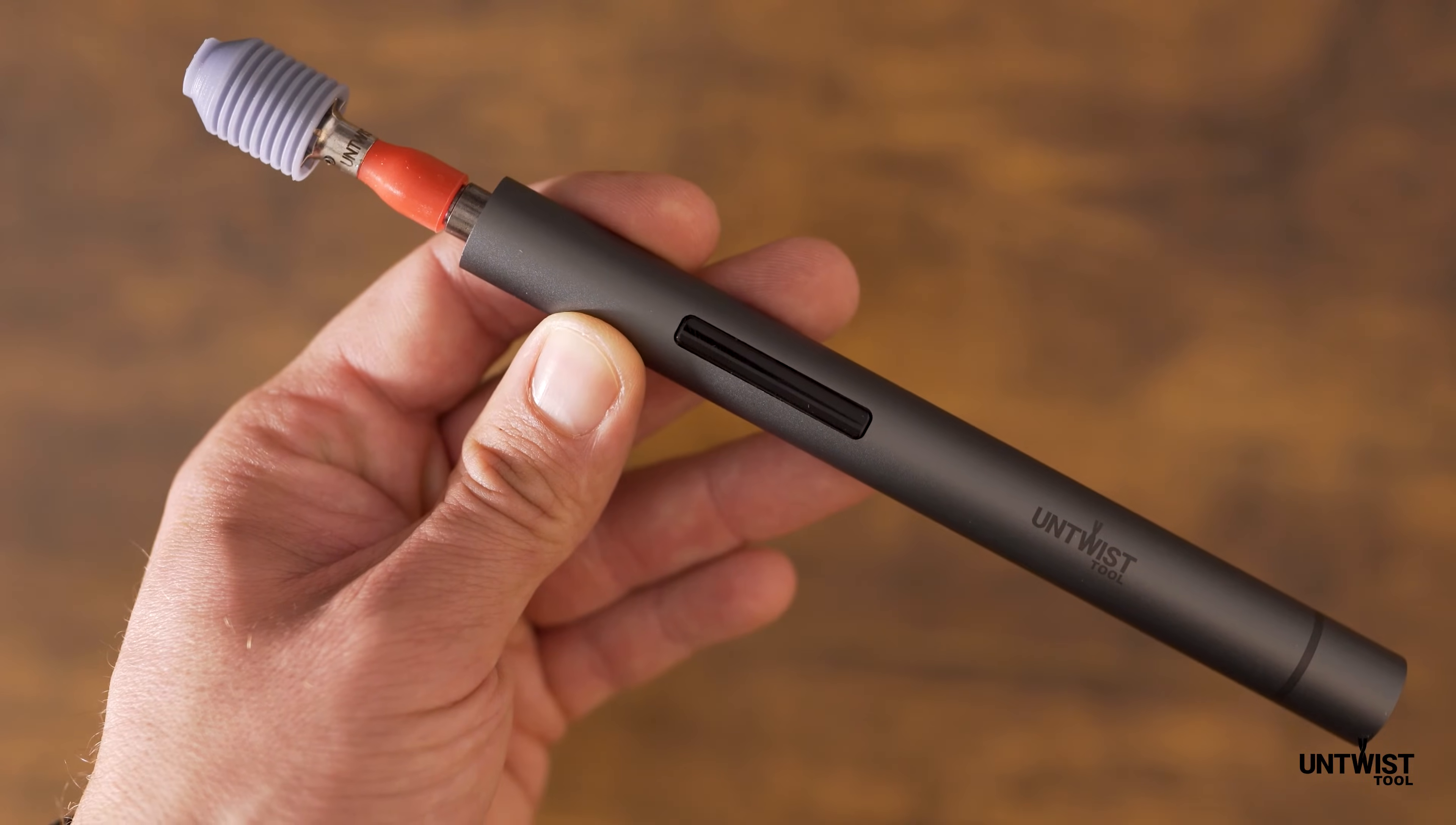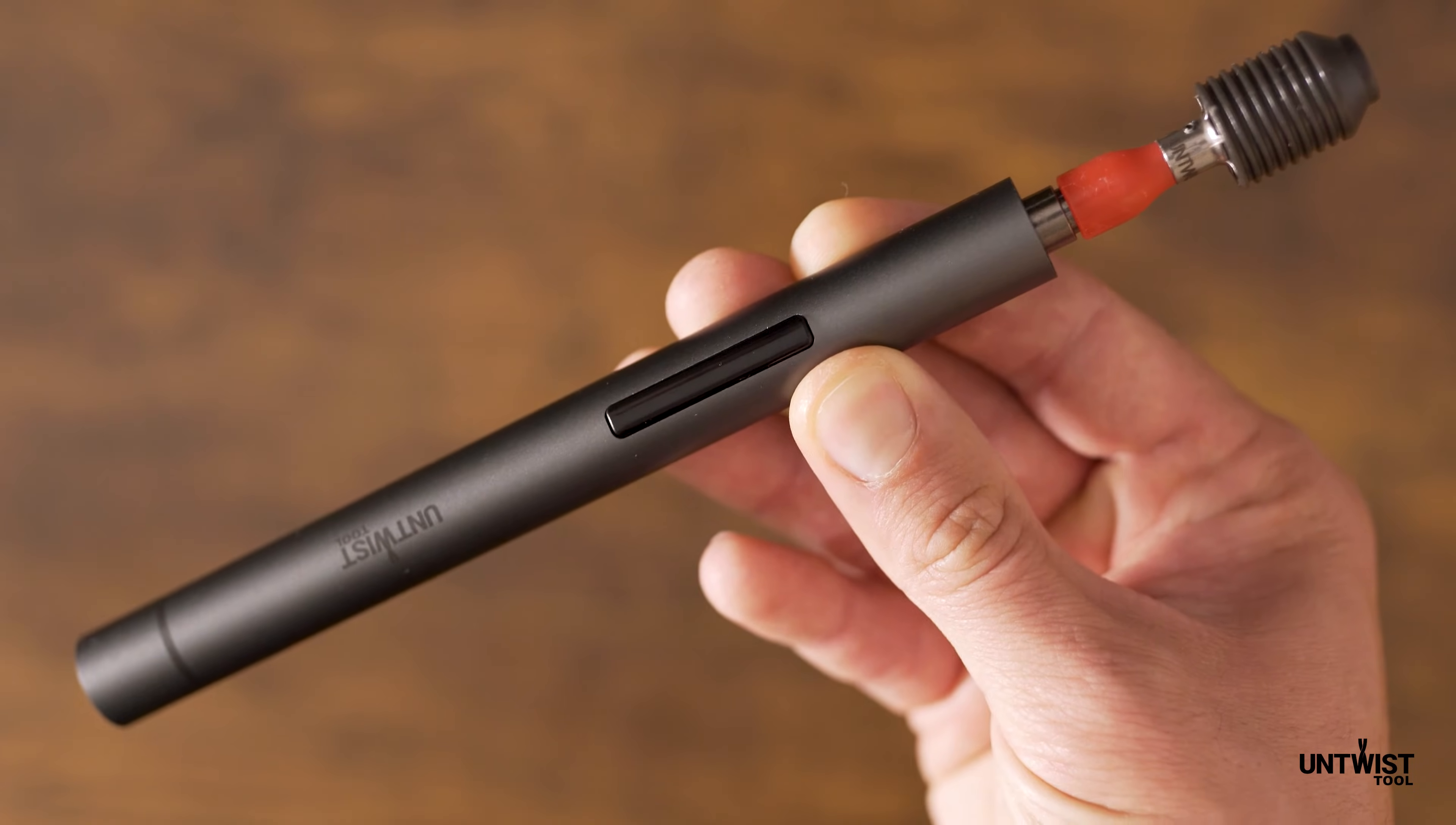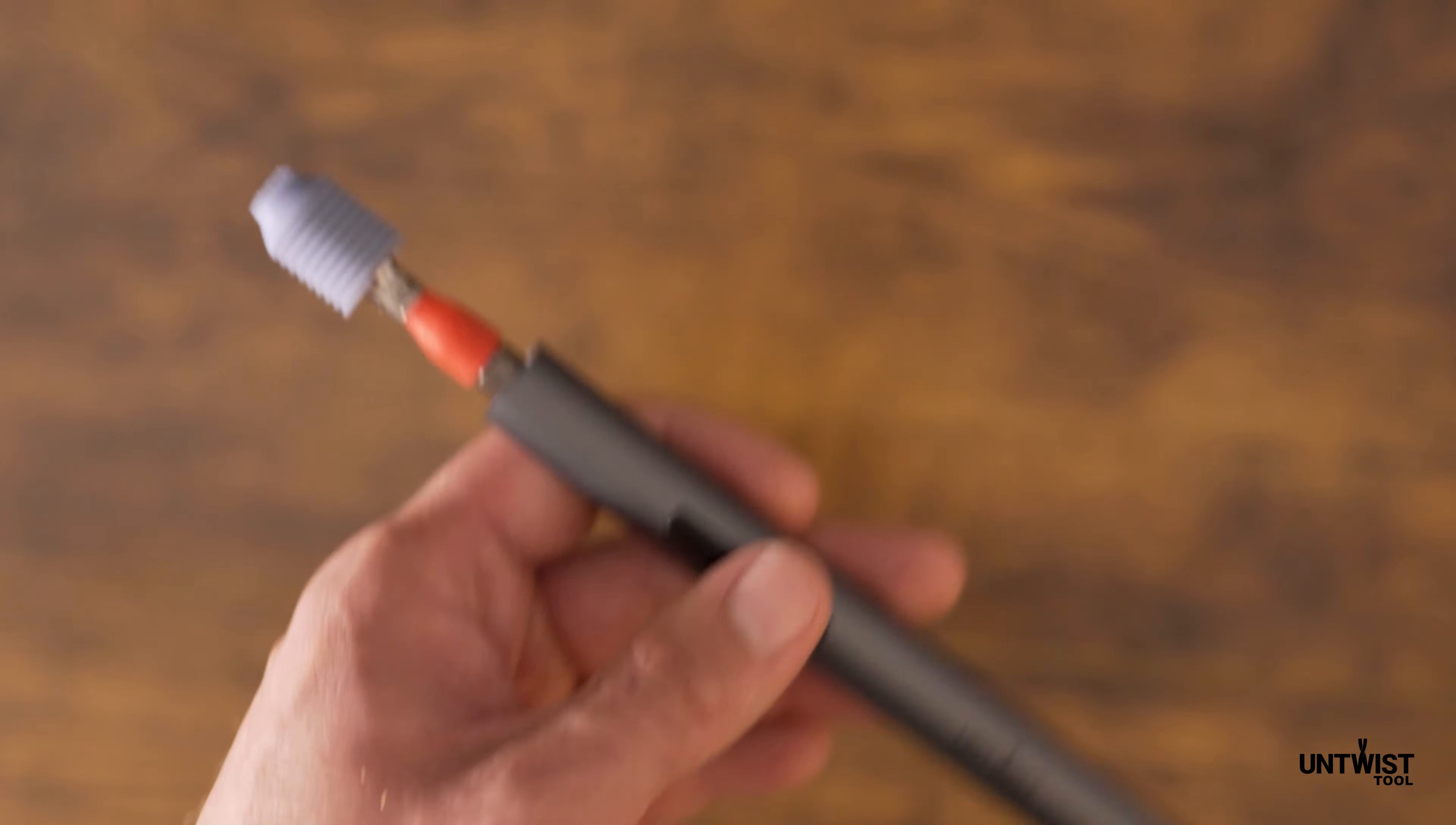This is the Untwist Tool Pro 56 and his bigger brother Untwist Tool Pro 67. The Pro 56 is designed to successfully untwist Cat5e and Cat6 network cables.